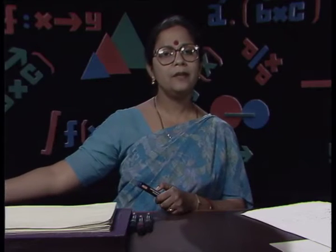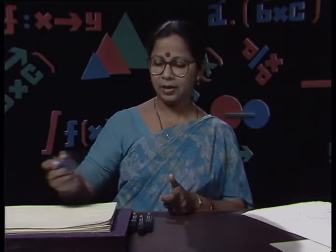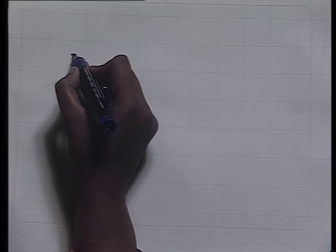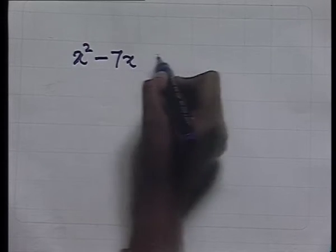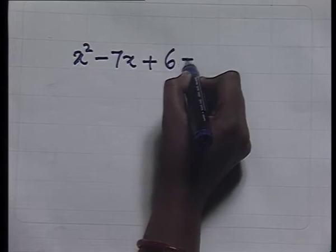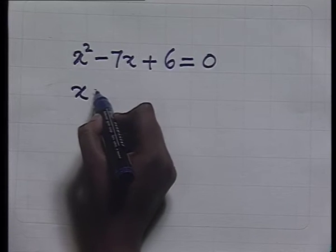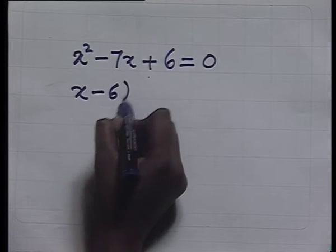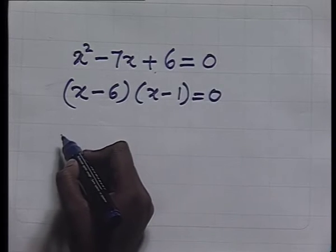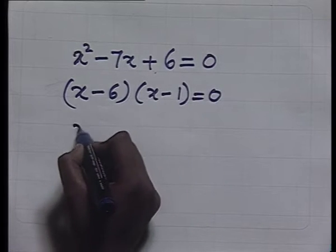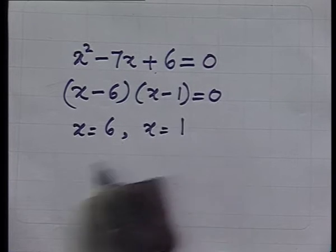Given an equation, we know how to find its roots. For example, to find the roots of x² - 7x + 6 = 0, we factorize it: the factors are (x - 6)(x - 1) = 0, which gives us the roots x = 6 and x = 1.